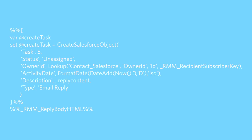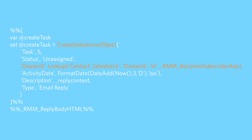You can also log details of the email reply in a data extension, and you can even create Salesforce tasks or events in Sales Cloud from the email reply. Here's some example AMPscript code that can be included in a triggered send email to create a Salesforce task. The CreateSalesforceObject function is used to create a new task which is assigned to the owner of a lead or contact, and includes an abstract of the email reply.